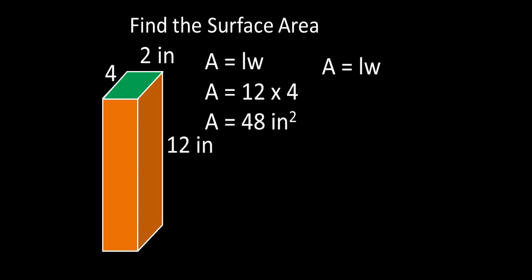The next rectangle we'll look at is the top and the bottom. That has a length and width of four and two. So we multiply four times two and that gives us eight. Eight square inches is the area of the top and bottom.